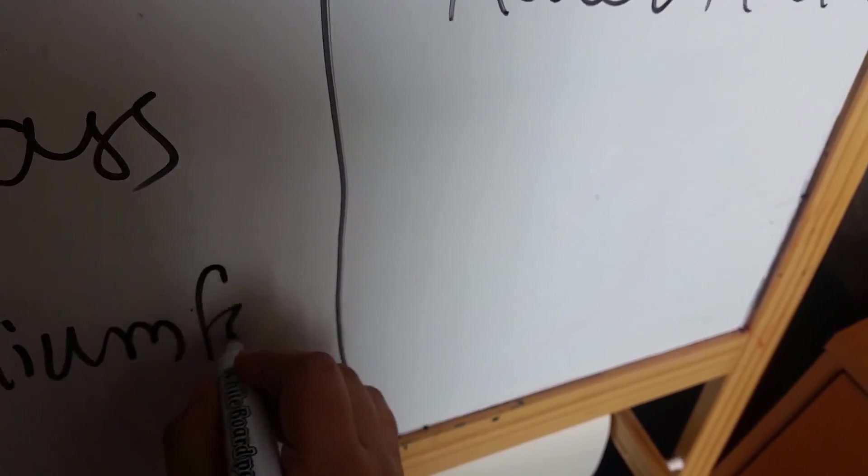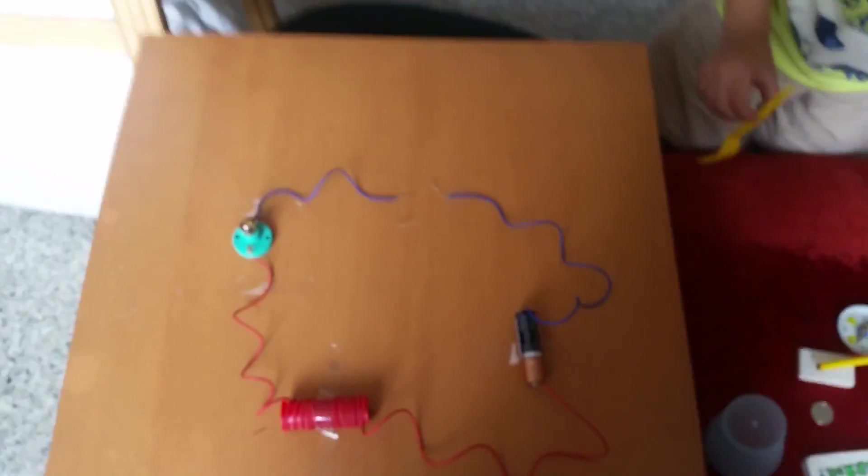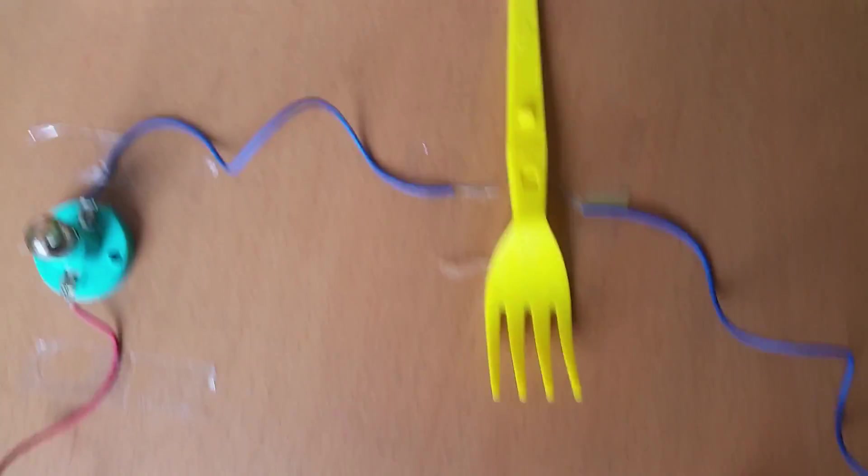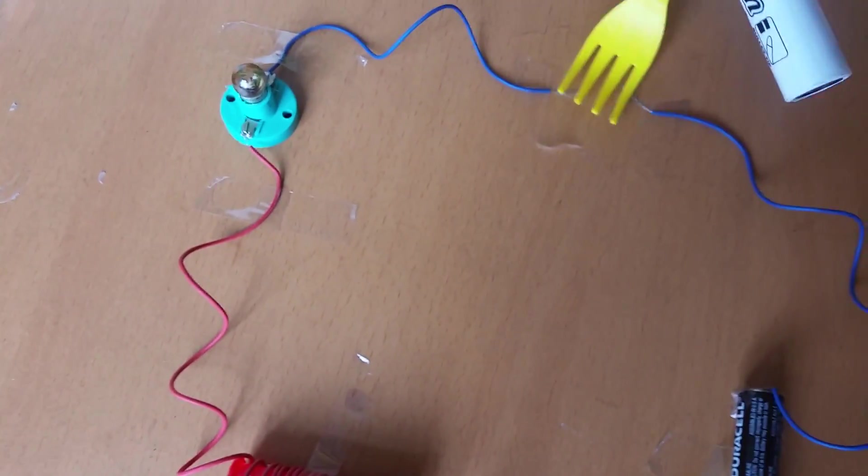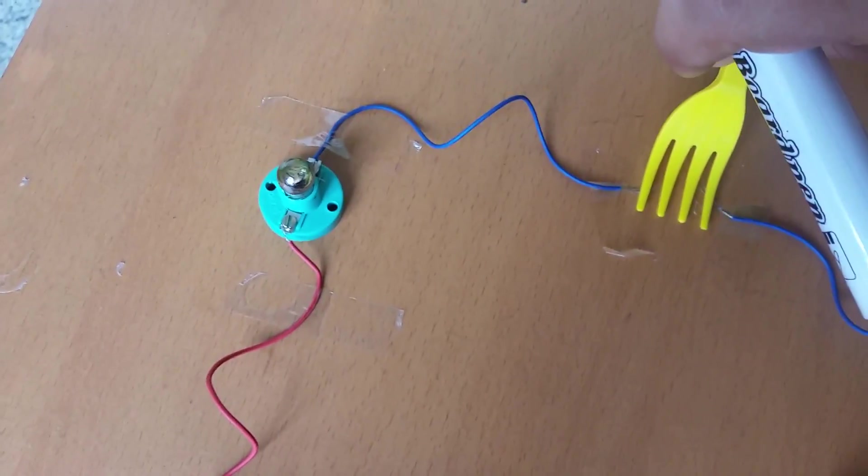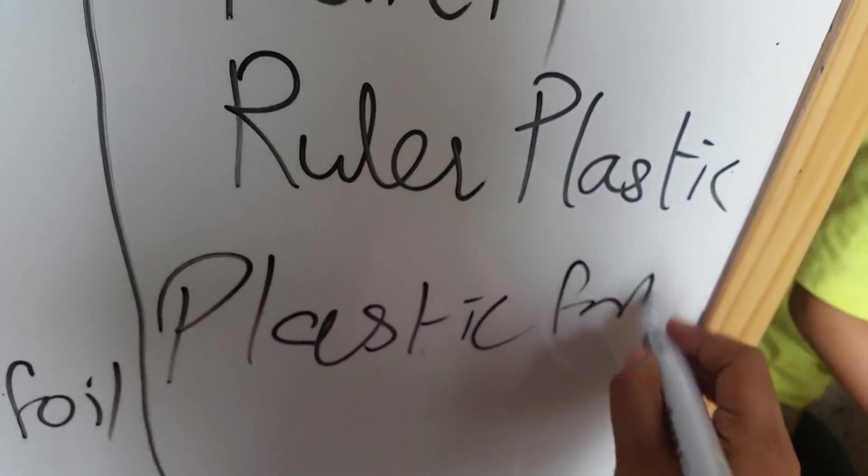What are you trying next? How about fork? Okay. That fork is made of? Plastic. Make sure it touches both the wires. And still it's not able to glow the bulb. So it's an insulator.